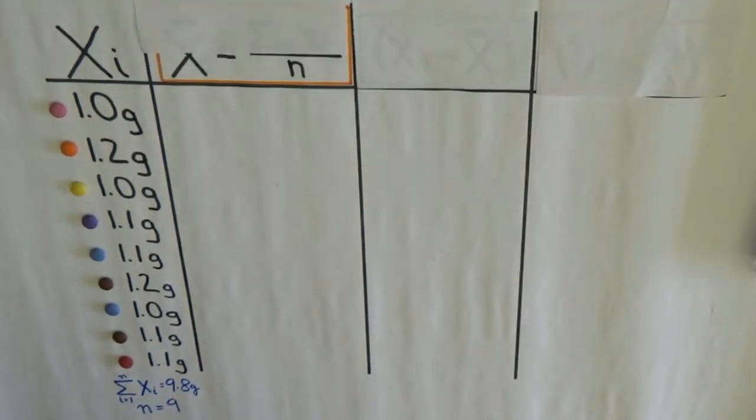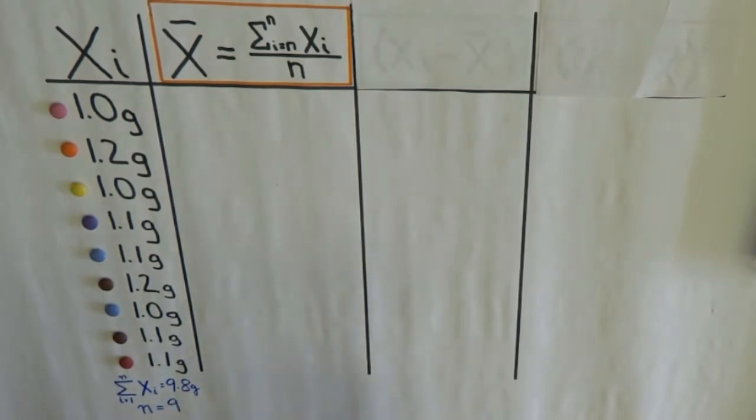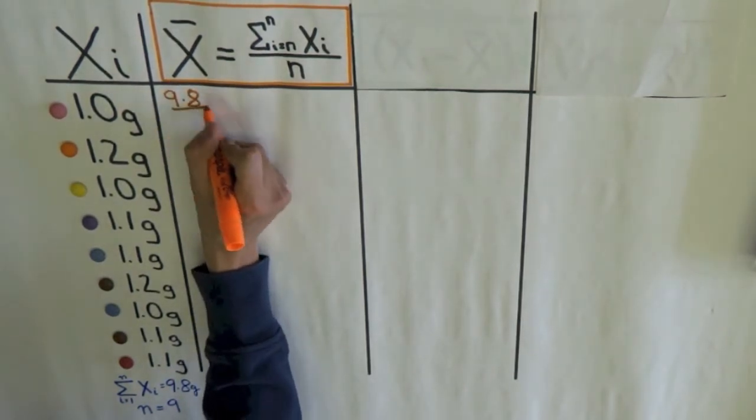The first step is to calculate sample mean, which is represented by x bar. To find my sample mean, I just need to divide my total weight by number of smarties. So, if I divide 9.8 by 9, I get...